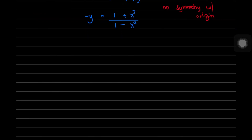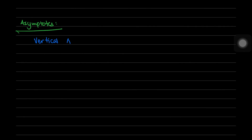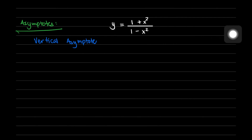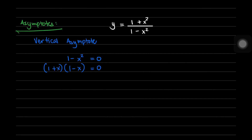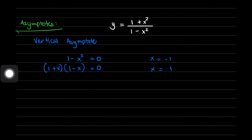The next step is to determine the asymptotes. For the vertical asymptote, we set the denominator equal to 0: 1 - x² = 0, which factors as (1 + x)(1 - x) = 0. Solving gives x = -1 and x = +1. These are the equations of the vertical asymptotes.